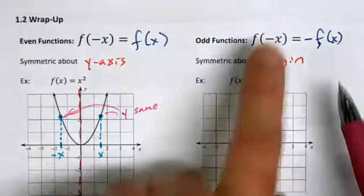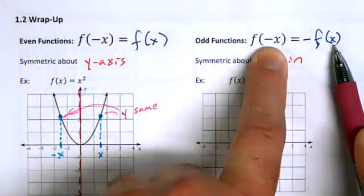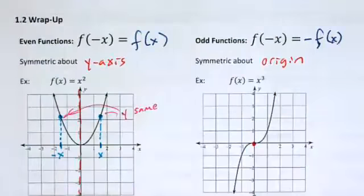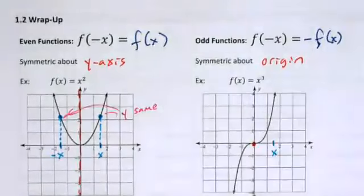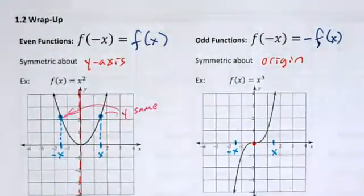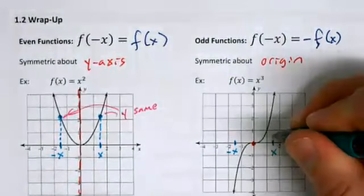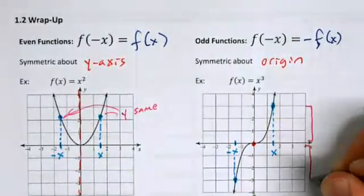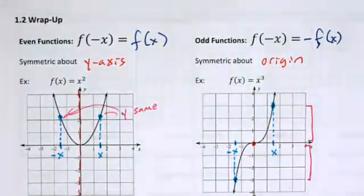For odd functions, plugging in x and negative x does not give the same y-value. One y-value is positive and the other is negative — the same magnitude but opposite sign. Graphically, at x between one and two you get about positive three, and at the corresponding negative x you get about negative three.